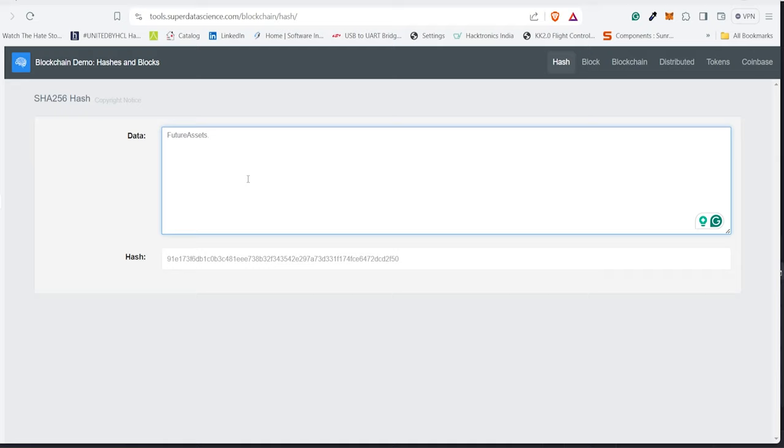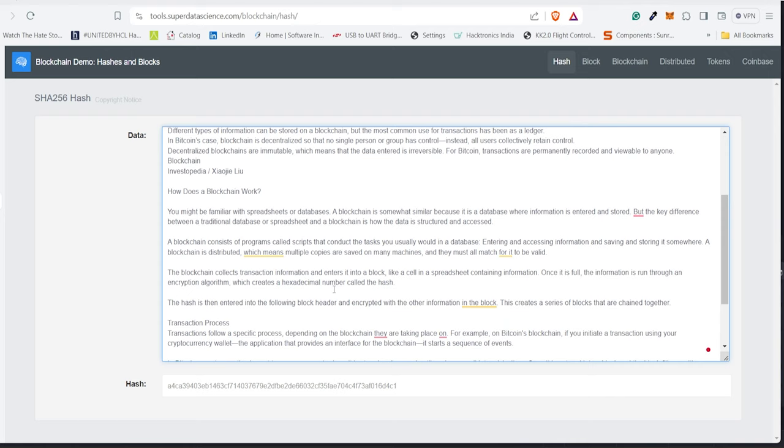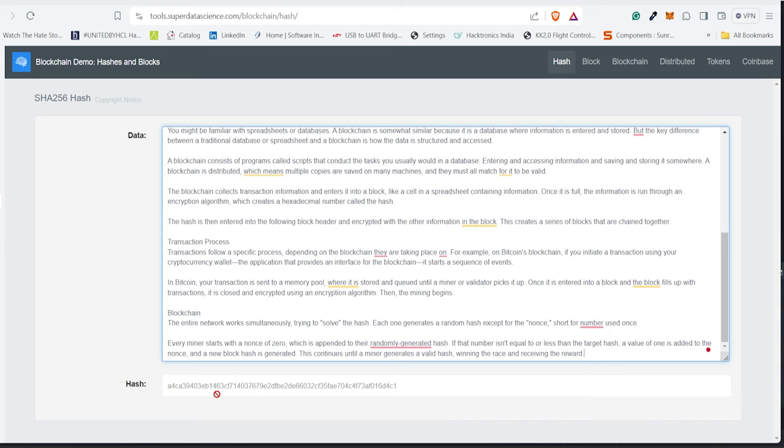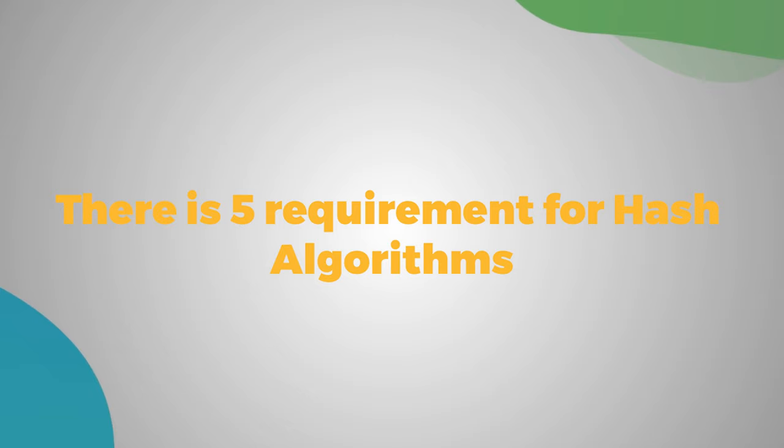As discussed, you can put anything here, and one thing to keep in mind is you'll always get a hash which is 64 characters. Let's try pasting this article and see—you will get the hash which is just 256 bits, which is 64 characters. So there we go, that's SHA-256 in demonstration. I will also paste this link in the video description, and you can play with your own sets of words.